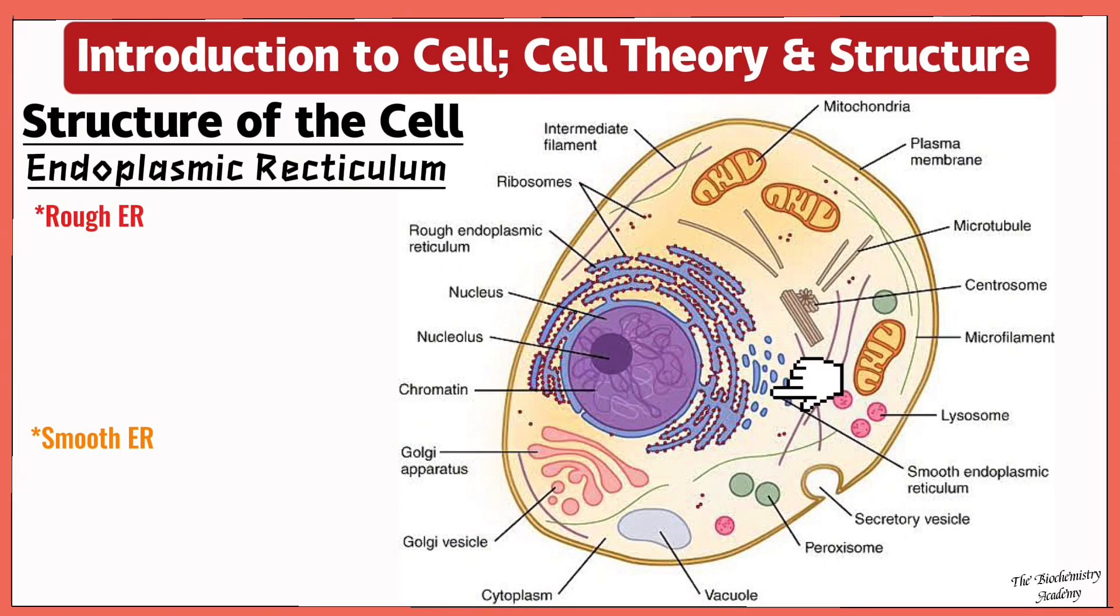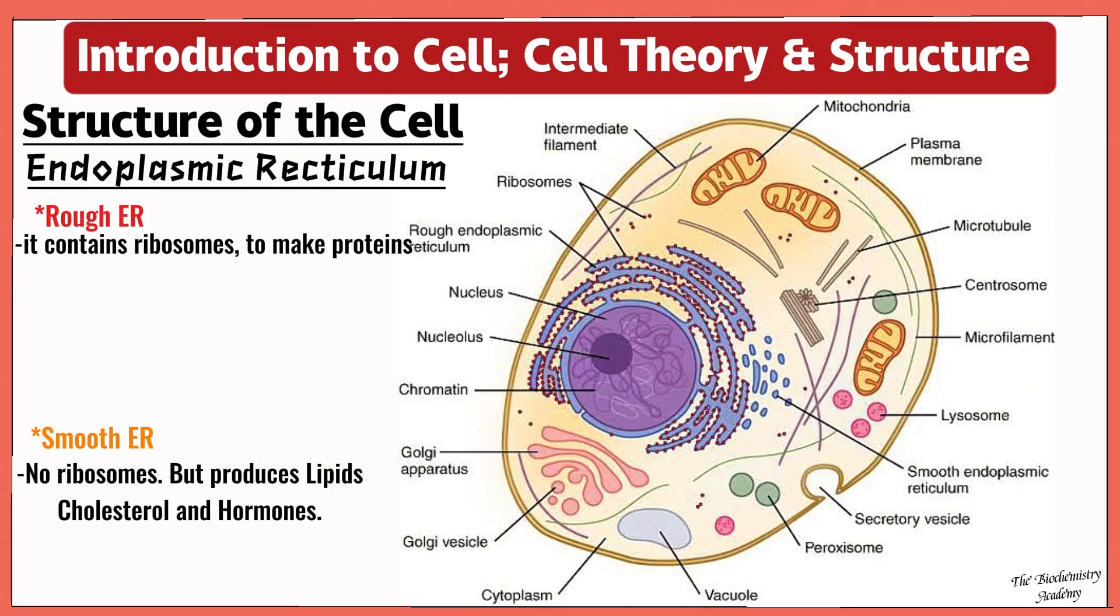So what do you think differentiates the both of them? Well, in the rough ER it contains ribosomes which are used to produce proteins, while in the smooth ER it does not contain ribosomes but it produces lipids, cholesterol, and hormones. In the rough ER it transports proteins using vesicles, while in the smooth ER it functions in detoxification, which means breaking down toxic substances into less or non-toxic form by making it more water soluble.